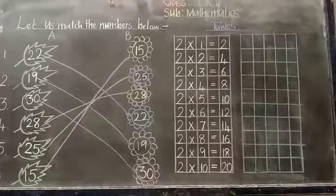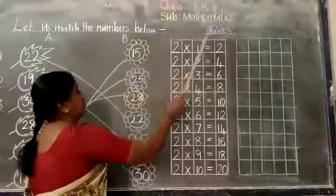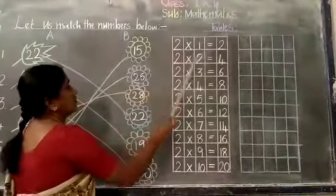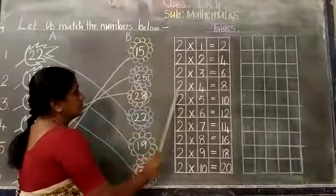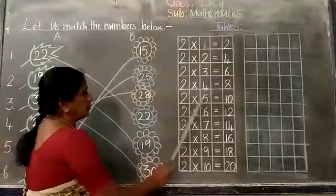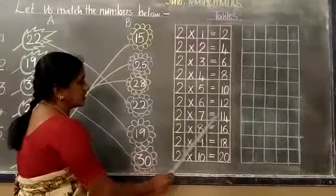2 ones are 2. This is about tables today. 2 ones are 2. 2 twos are 4. 2 threes are 6. 2 fours are 8. 2 fives are 10. 2 sixes are 12.